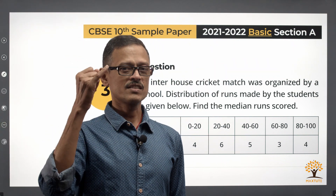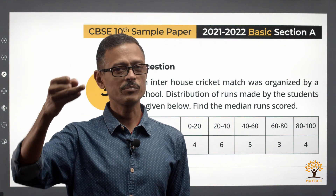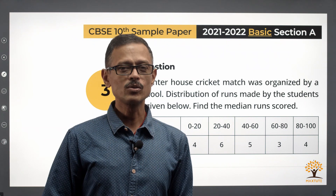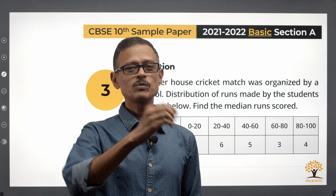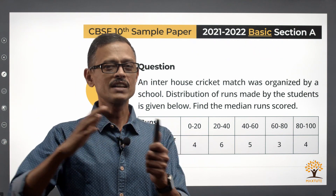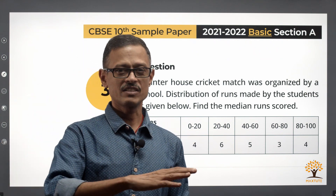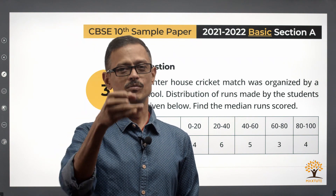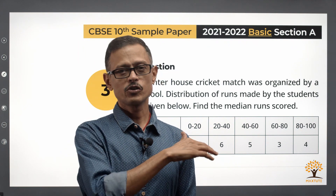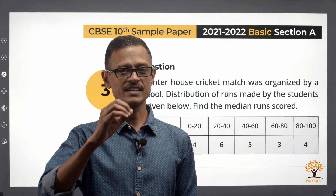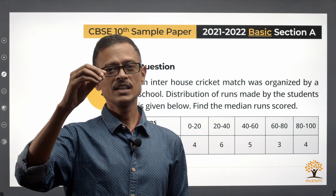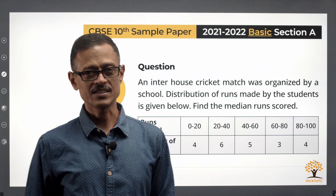What are the concepts tested? One question is about computing median, the second one is about computing mode, and the third one is about computing mean. So all three concepts have been covered. What you need to know to solve these questions is your ability to work with exclusive class frequency tables, converting them into cumulative frequency and vice versa, and the formulas to compute median, mode, and mean when a frequency distribution is provided. Reasonably straightforward questions — if you've done reasonable practice with your exercise questions, you should be able to crack this. Let's get started.